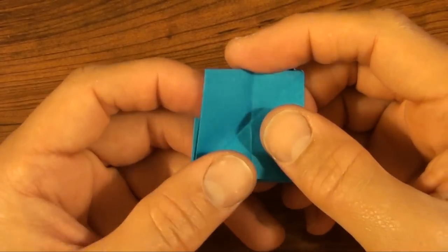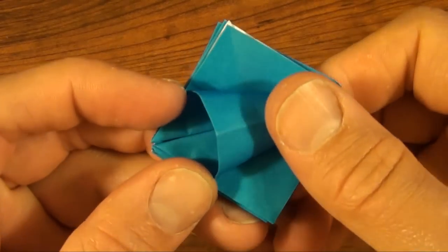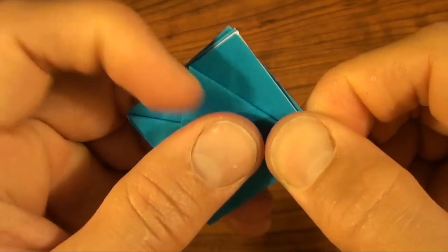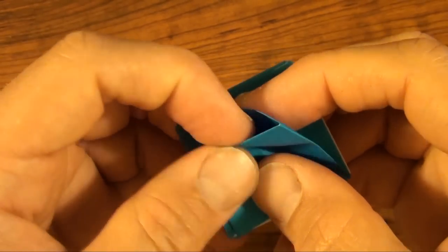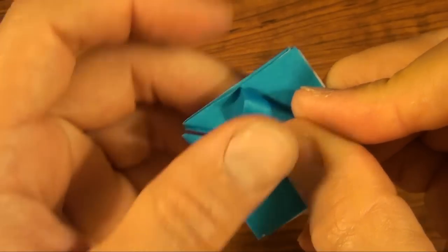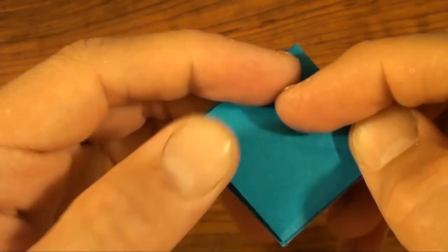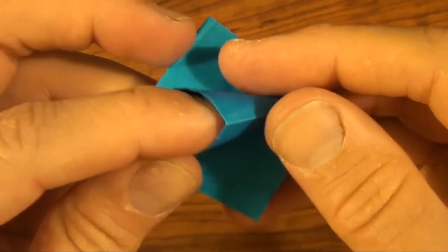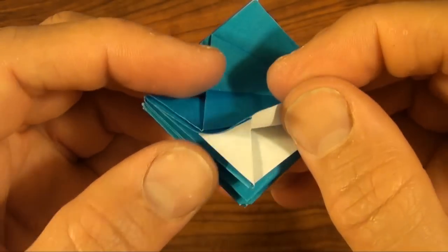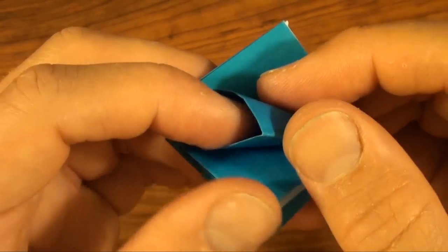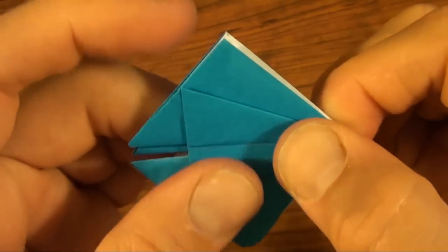So now we're going to make some squash folds. This flap right here, just fold it back and forth and open it up. And squash it. And we're going to do that three more times. Here we go. And squash it. And we have to find the other one. So let's lift up some flaps there. And there it is. Open it up and squash. Turn it over. Fold up some flaps. Oh, there it is. And open it up and squash.